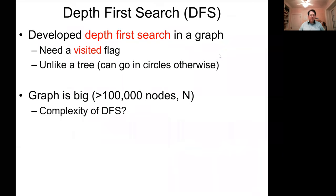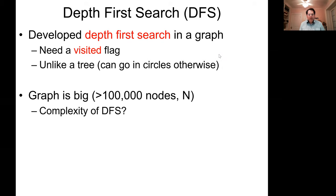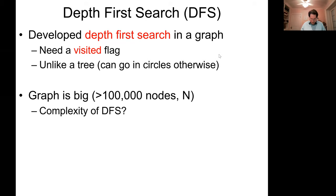We developed a depth-first search algorithm in a graph — it's a lot like the binary search tree recursion from ECE 244, but you need a visited flag to stop you from going around in circles. Graphs are big: the city maps you're working with have more than 100,000 intersections or nodes, sometimes more than a million. So what's the complexity of depth-first search, specifically in a street map?